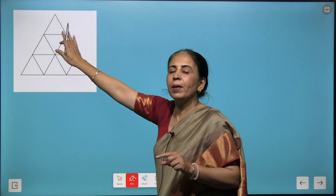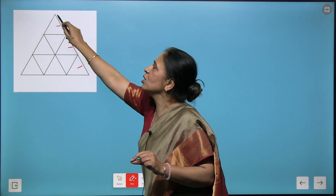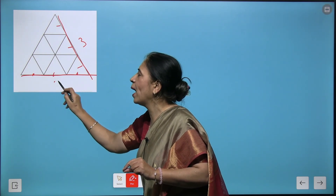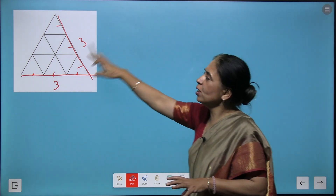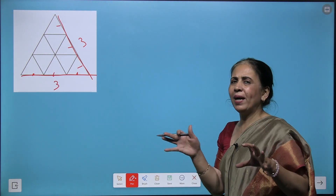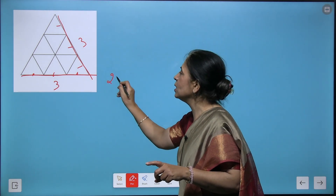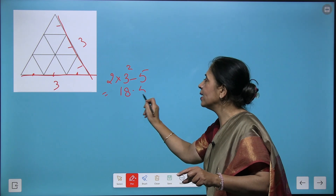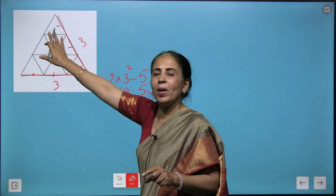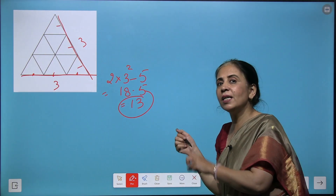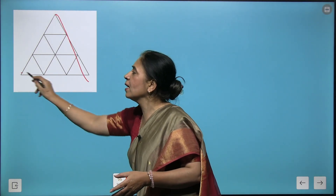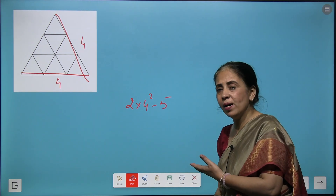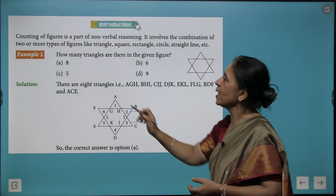Now let's move to this figure. First, analyze how many partitions are in the vertical form — we have three partitions. Looking horizontally, again we have three partitions. Finding the total triangles seems difficult, but here's a formula: 2 times n² minus 5. With n=3: 3² is 9, times 2 is 18, minus 5 gives 13 triangles — without actually counting! For four partitions on each side, simply use 2 times 4² minus 5.